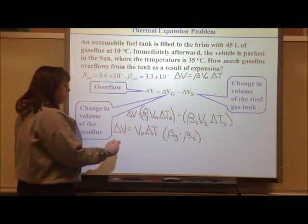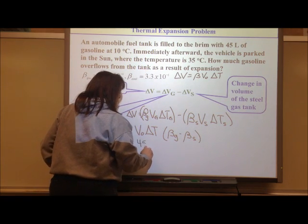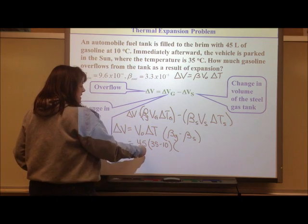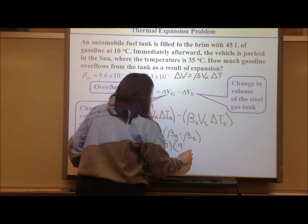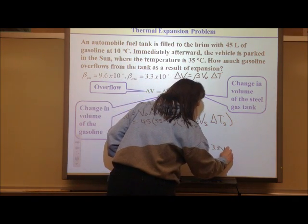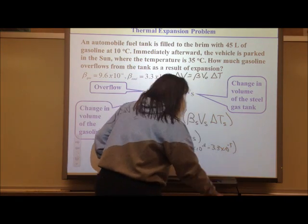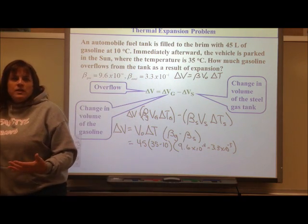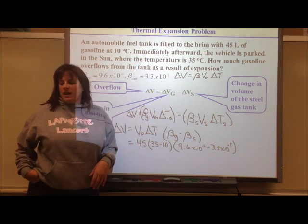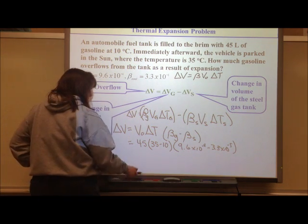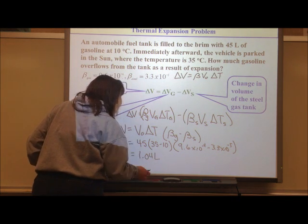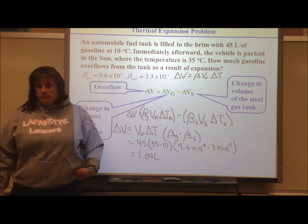Our initial volume is 45 liters, our change in temperature is 35 − 10 = 25°C, and we multiply by the difference in coefficients: (9.6 × 10⁻⁴ − 3.3 × 10⁻⁵). When you solve this, you find that you lose just over a liter of gas. So don't fill your tank to the brim and then park it in the sun.